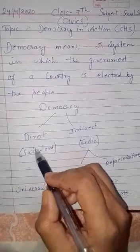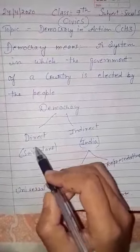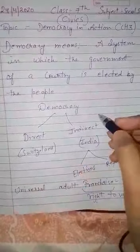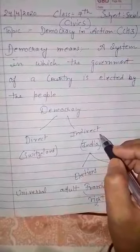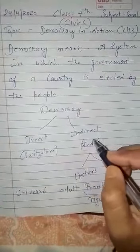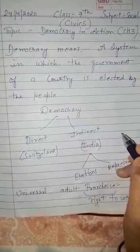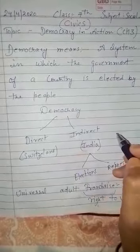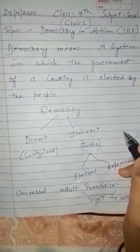Why is Switzerland a direct democracy? Because Switzerland has less population. On the other hand, India is following indirect democracy. Why? Because our country has the largest population in the world, so it is not possible for the whole country to meet at one place and discuss issues.